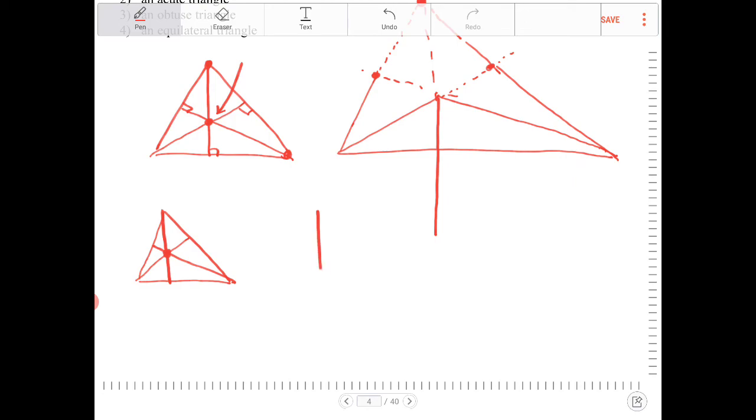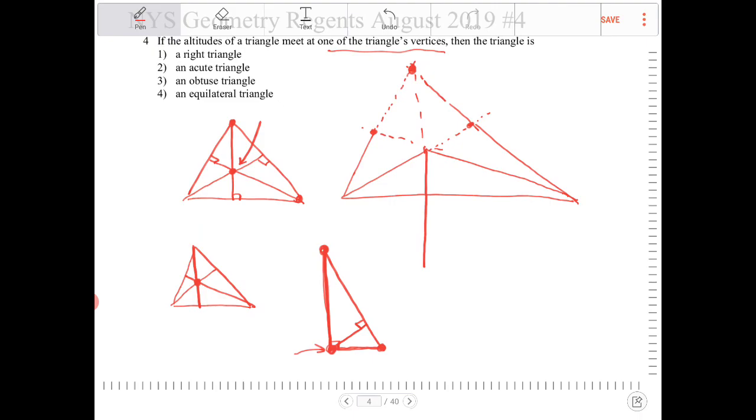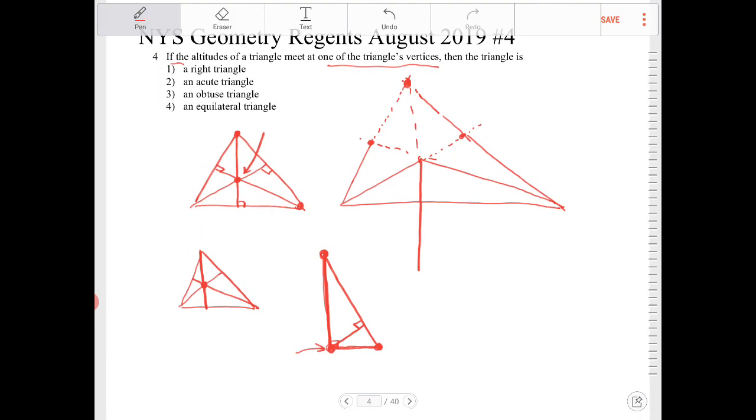That leaves me with just a right triangle now. So now I want to draw a right triangle. And if you look at this, from the vertex here, I drop a line down. So this line is, in fact, an altitude. The base here, draw a line. This base is also an altitude, which leaves me with the last line over here. This is also an altitude. So this last point right here is the common point where all the altitudes intersect. So the only one that makes sense is a right triangle.